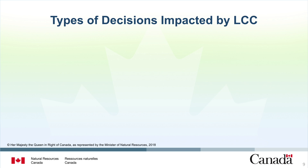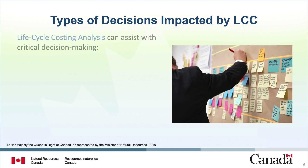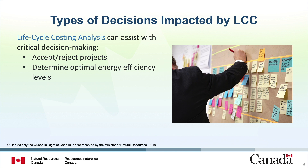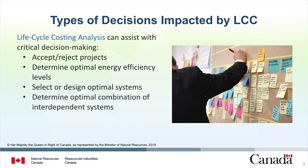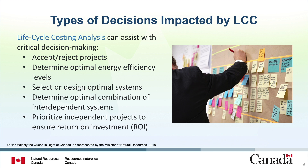Lifecycle costing analysis can assist with five major types of project related decisions. These five types can apply to straightforward routine operating and maintenance procedures as well as large multi-year capital planning projects. First, lifecycle costing analysis can help determine whether to accept or reject a project based on its cost effectiveness. Second, it can assist in choosing a facility's optimal energy efficiency level. Third, lifecycle analysis can assist in selecting or designing the optimal energy system. Fourth, it can assist in determining an optimal combination of interdependent systems to improve whole building performance. And fifth, it can assist in prioritizing independent projects to determine which are the best to fund.